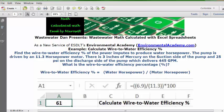In that cell you will have the answer of 61%, which is the wire-to-water efficiency percentage based on this data. So that's your answer.